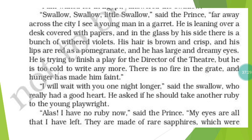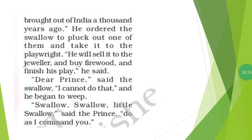The happy prince continued: 'Far away across the city I can see a young man in a garret — a small dark room at the top of the house. He is leaning over a desk covered with papers, and in the glass by his side there is a bunch of withered violets. His hair is brown, his lips are red as a pomegranate, and he has large and dreamy eyes. He is trying to finish a play for the director of the theater, but he is too cold to write anymore. There is no fire in the grate and hunger has made him faint.'